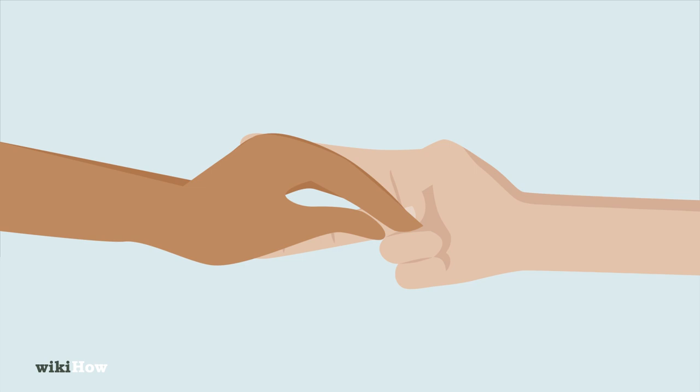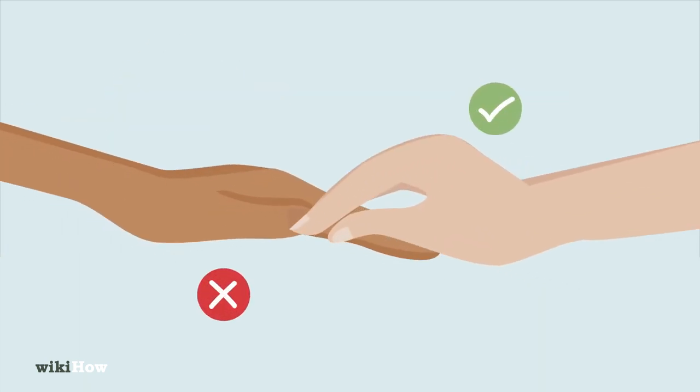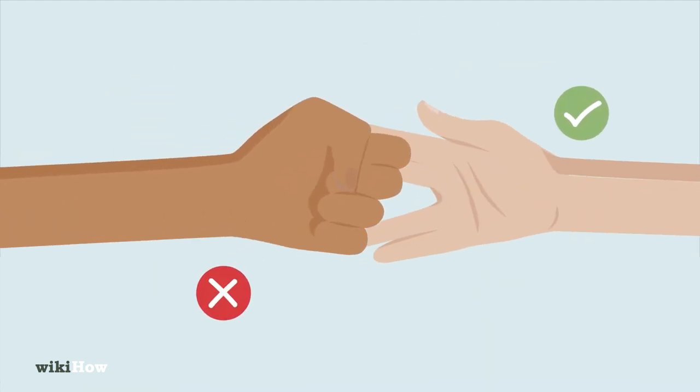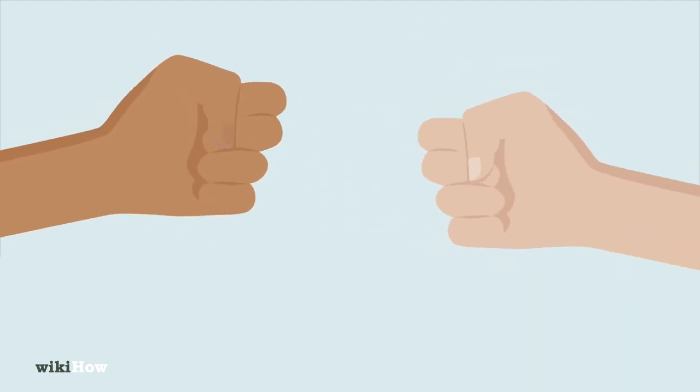Scissors decapitates lizard. Lizard eats paper. Paper disproves Spock. Spock vaporizes rock, and rock crushes scissors.